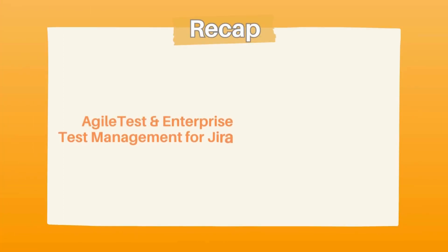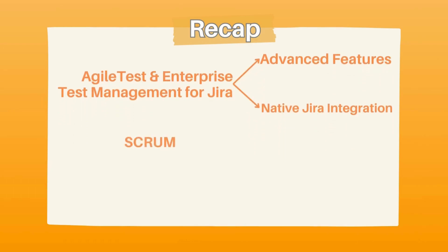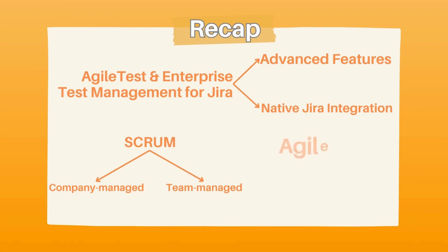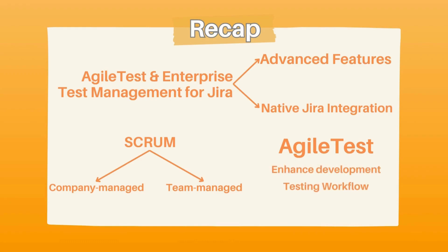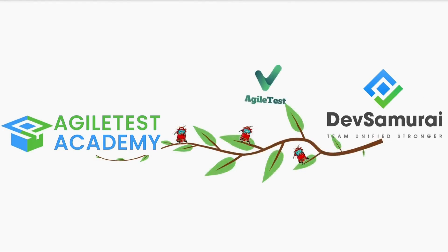Agile Test and Enterprise Test Management for JIRA enriches your JIRA setup by introducing advanced testing features. We demonstrated its integration using a Scrum template, noting its ease of use for company-managed projects, while team-managed projects require some manual configuration. Agile Test is a robust solution for those looking to enhance their software development and testing workflows within the JIRA ecosystem. Stay tuned, because we have yet to introduce Agile Test to all Agile enthusiasts — we will learn more about each feature and how to employ them in your testing activities.